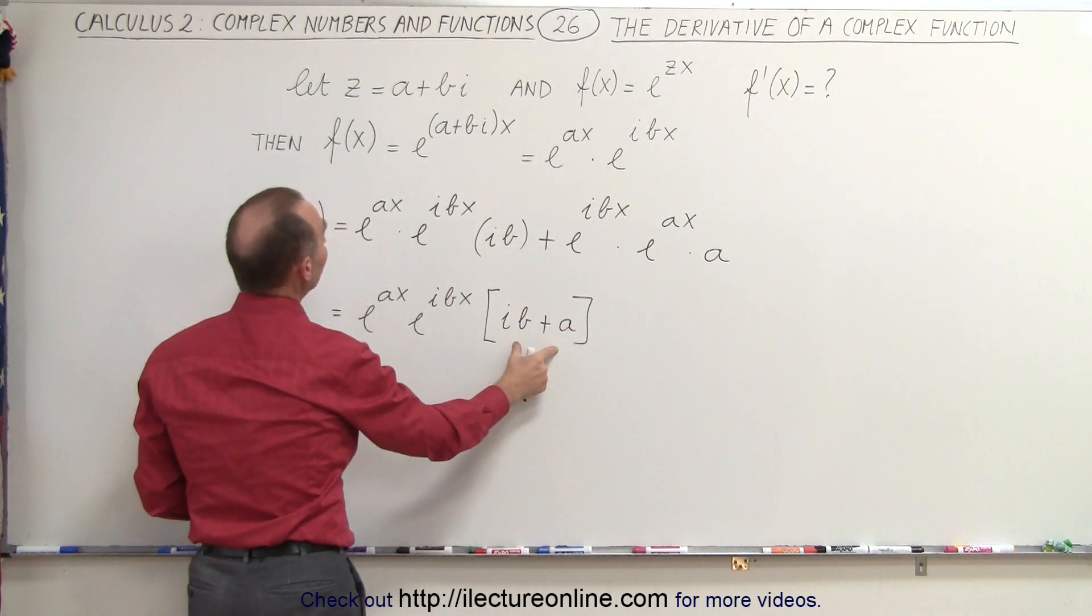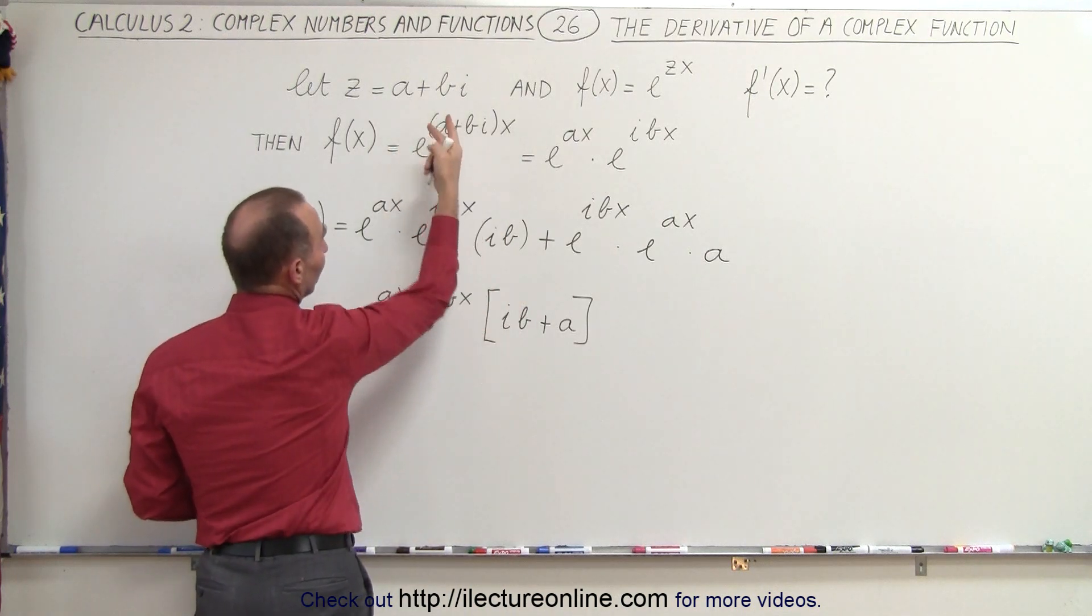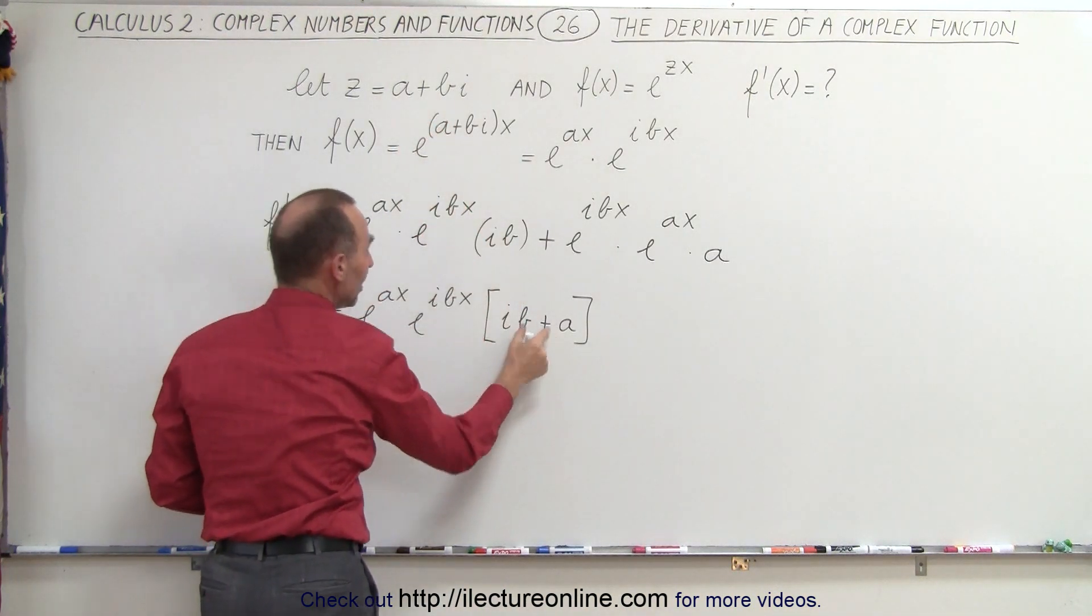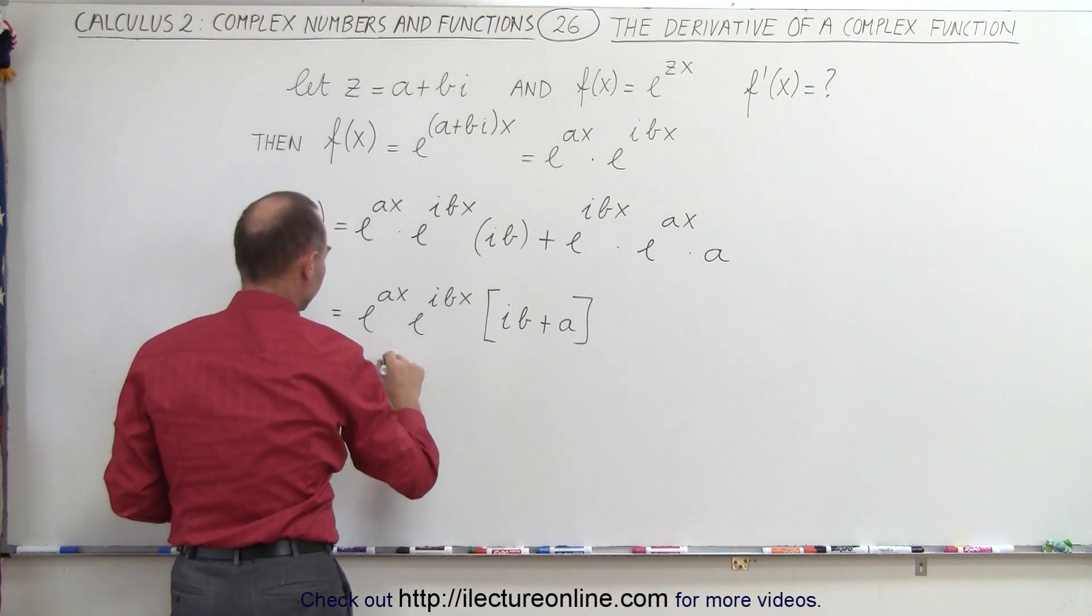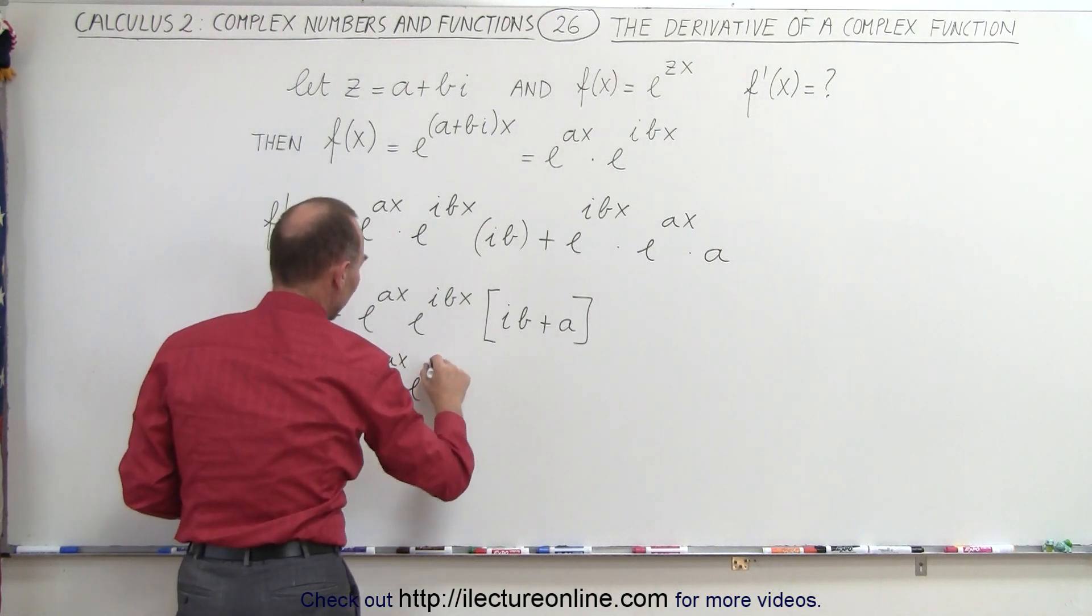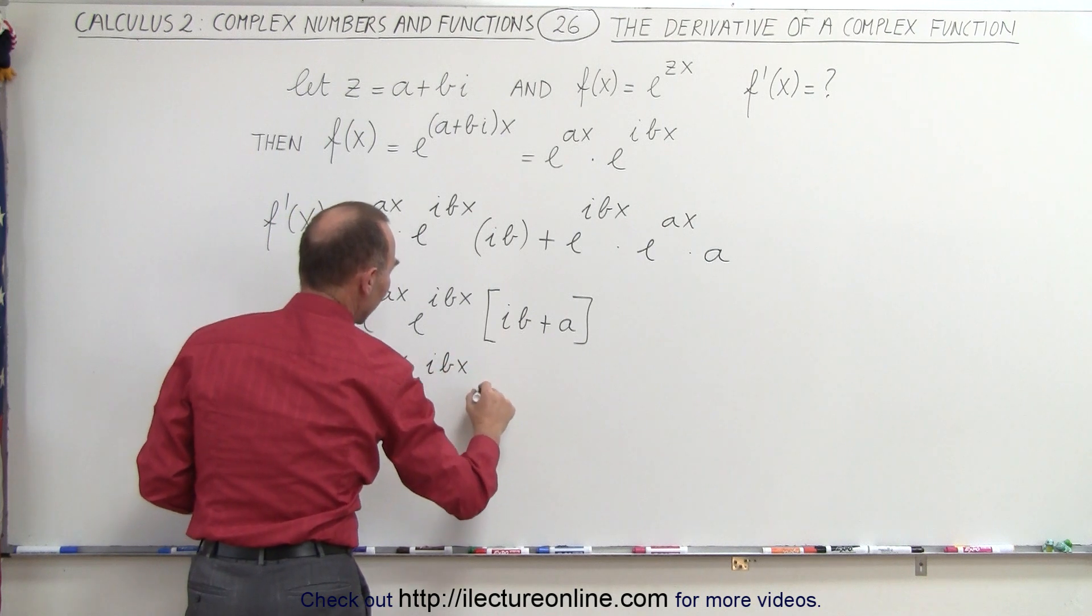And then when we look at this, well, that's really this in reverse. So that means that is equal to z. So this can be written as e to the ax times e to the ibx times z.